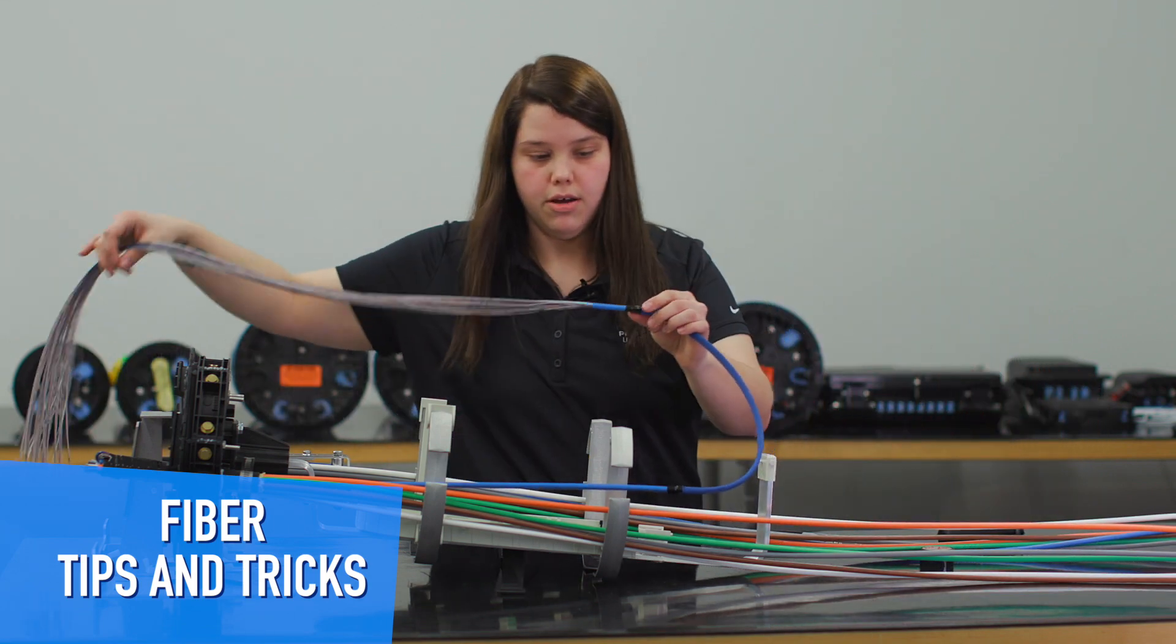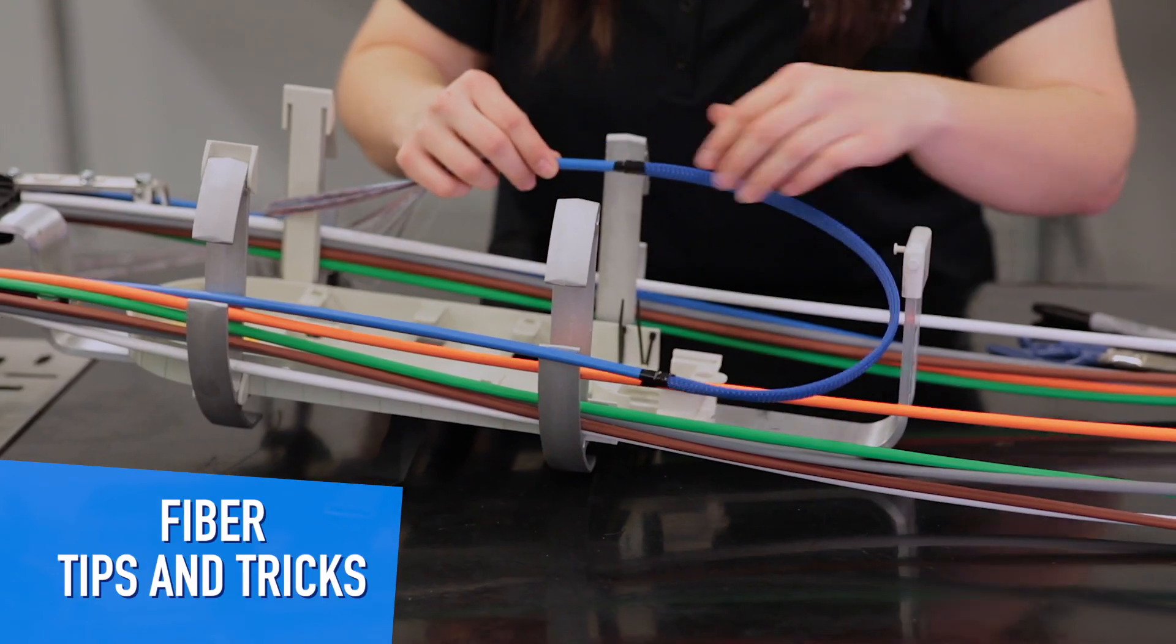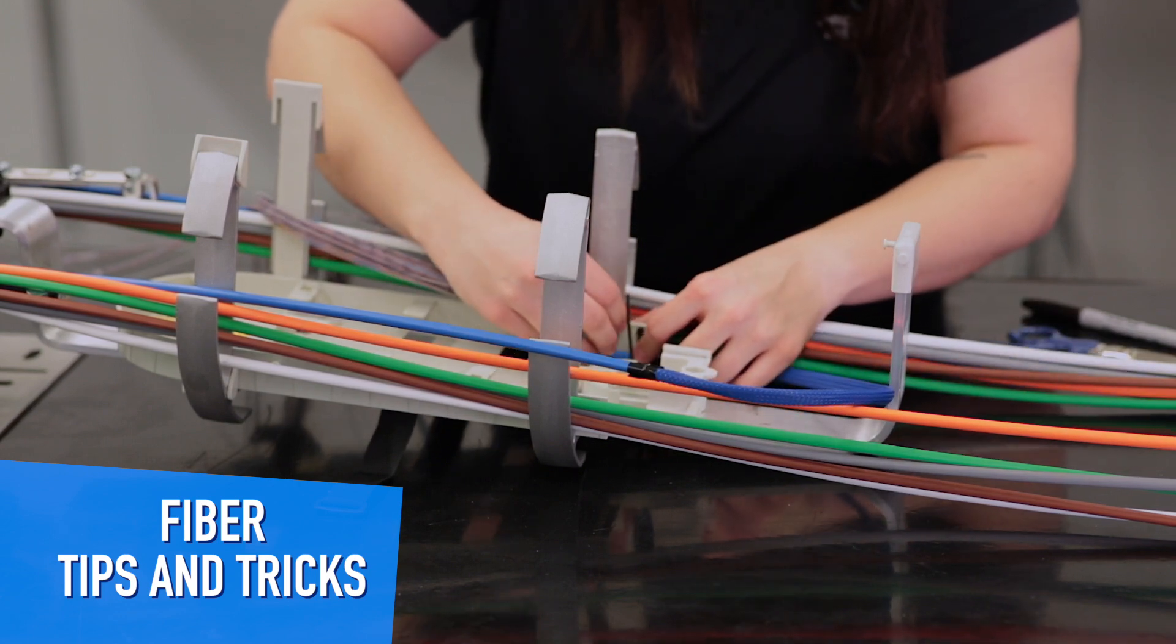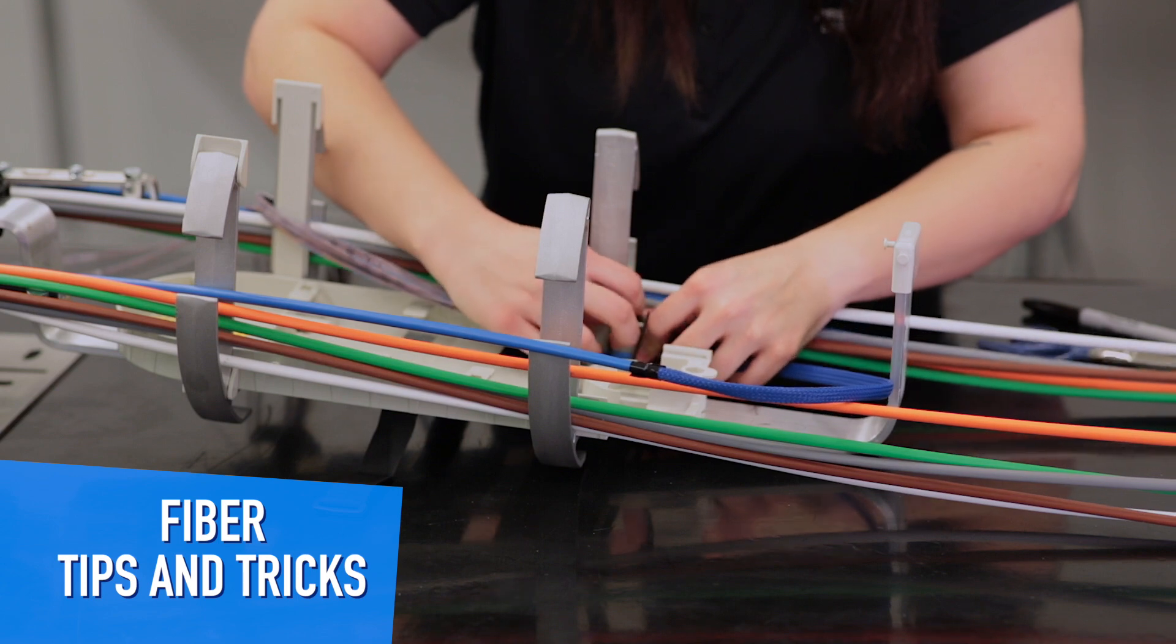Route your fibers to the tray. The buffer tube is gonna keep the fibers protected from the zip ties. Secure to the tray with zip ties.